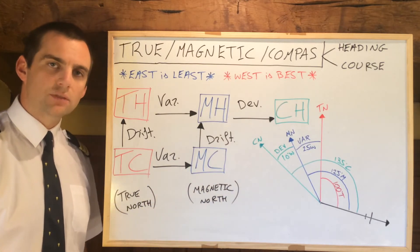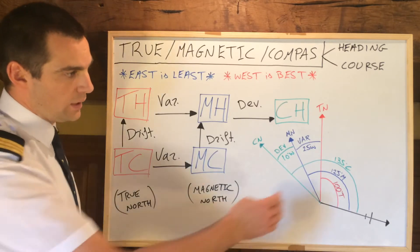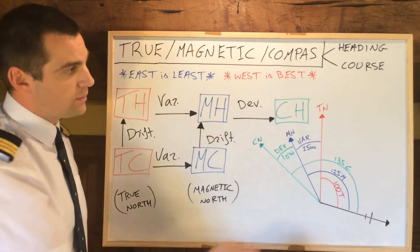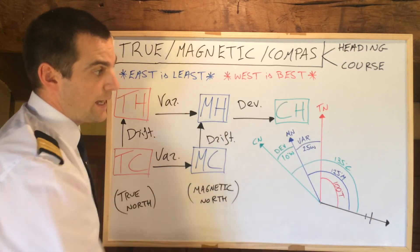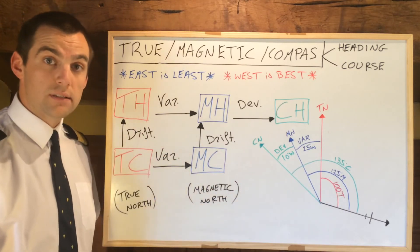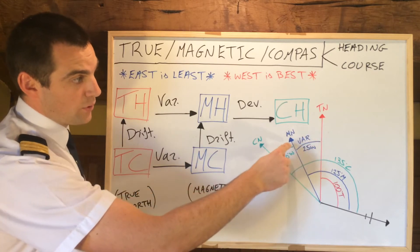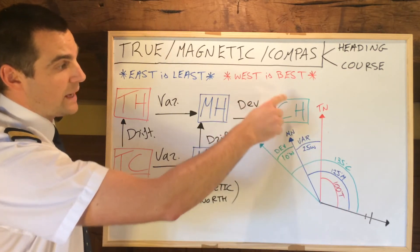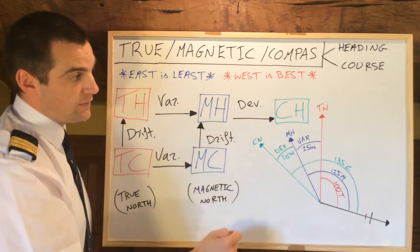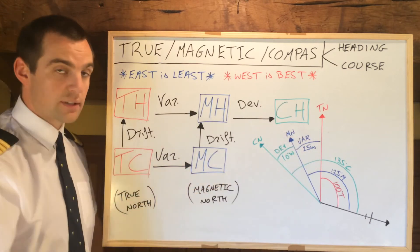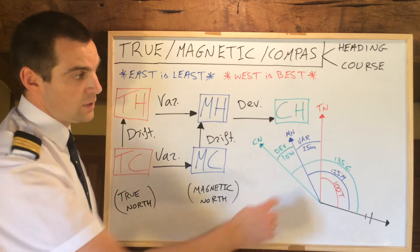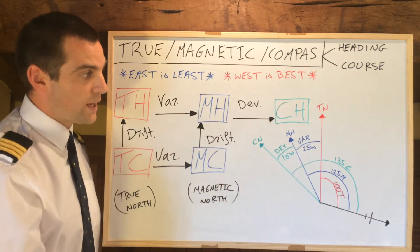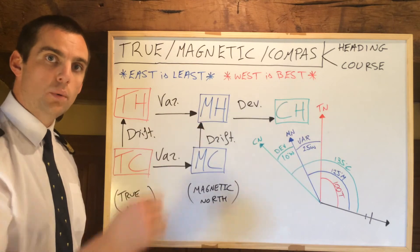Why is west best? Why do we add a westerly variation or deviation? I've drawn a simple example here. We have an aircraft lined up with a chart and true north, currently tracking a true heading of 100 degrees. If the variation is west — meaning magnetic north is 25 degrees west of true north — you can visually see that the angle is already bigger. That's why west is best: we add it on, it's a bigger angle. The same goes for deviation. In this example, with a 25 degree west variation, our magnetic heading would be 125. Then, adding 10 degrees west deviation, we get a compass heading of 135, which is what we follow with the compass on the aircraft.